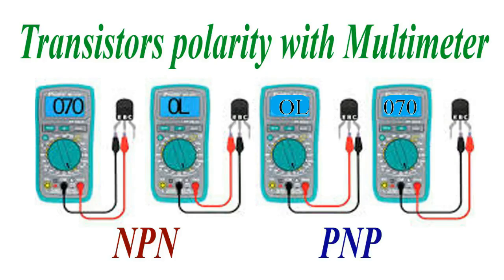For NPN, the red or positive probe of the multimeter should be placed on the base. If you get a reading when you touch the negative probe to both the collector and emitter, it is an NPN.